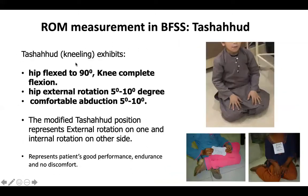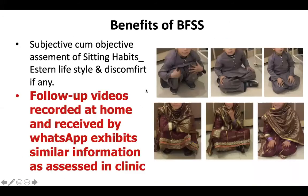In tashud, a kneeling posture, the hip is able to flex 90 degrees, the knee is able to flex completely, hip has external rotation of 5 to 10 degrees, and comfortable abduction of 5 to 10 degrees. There is also a modified tashud position in which one leg is in external rotation and one leg is in internal rotation and out to the side.